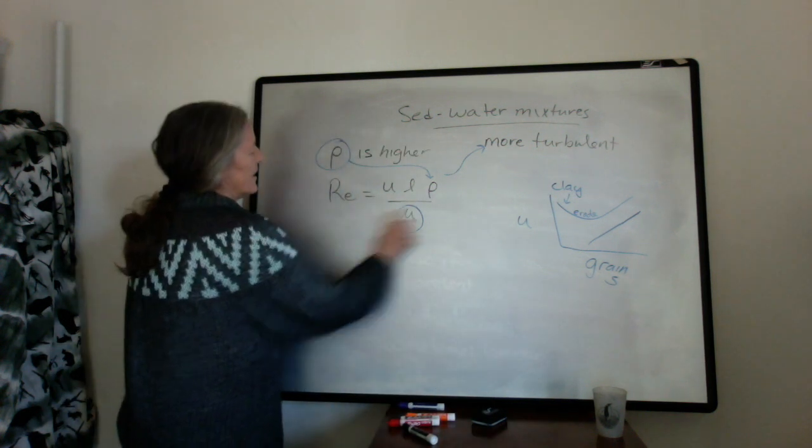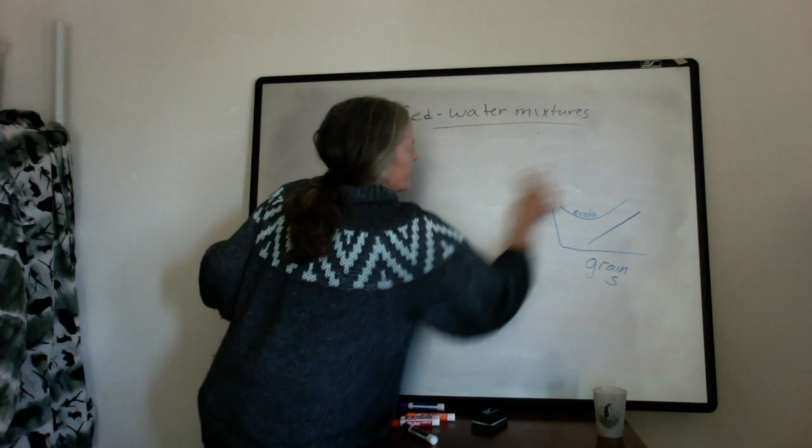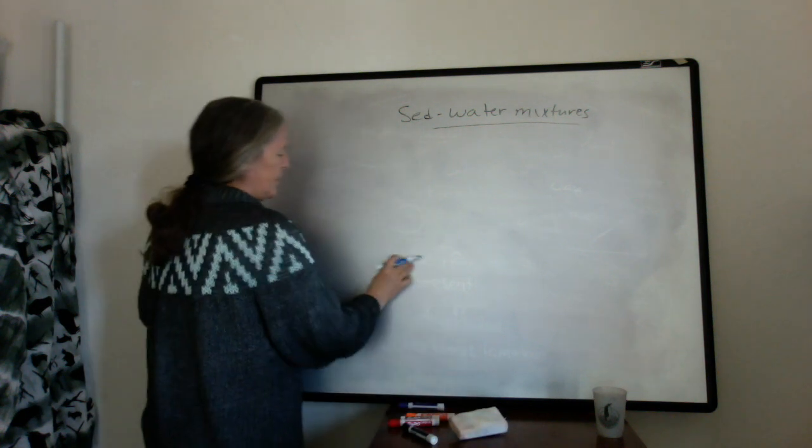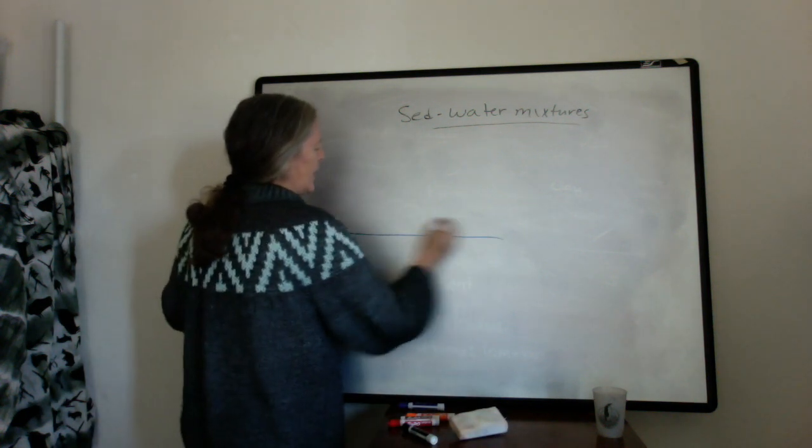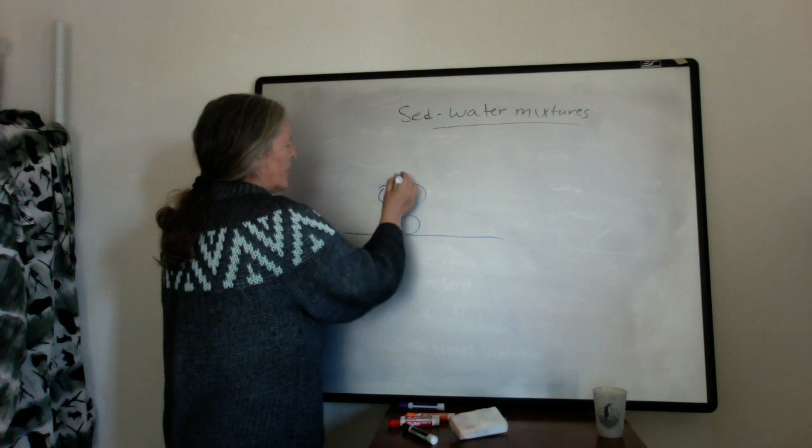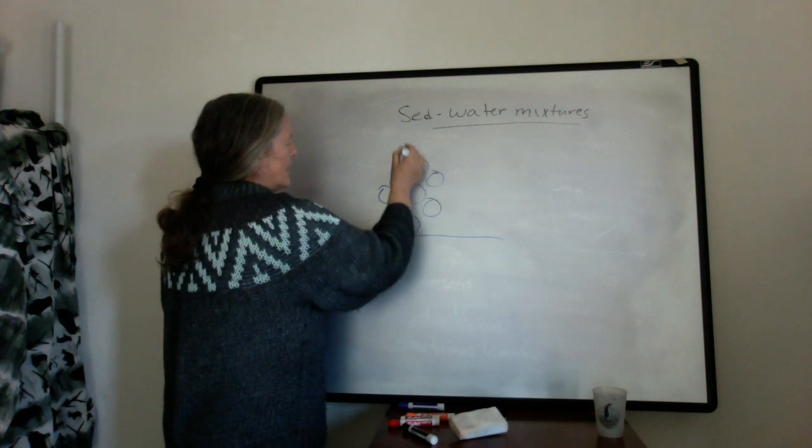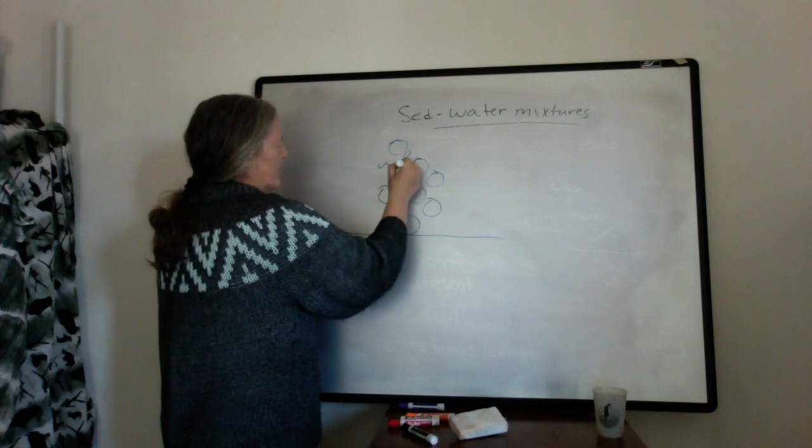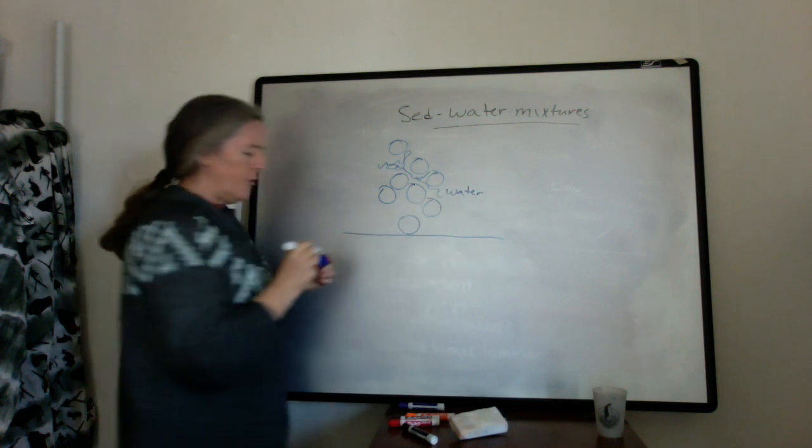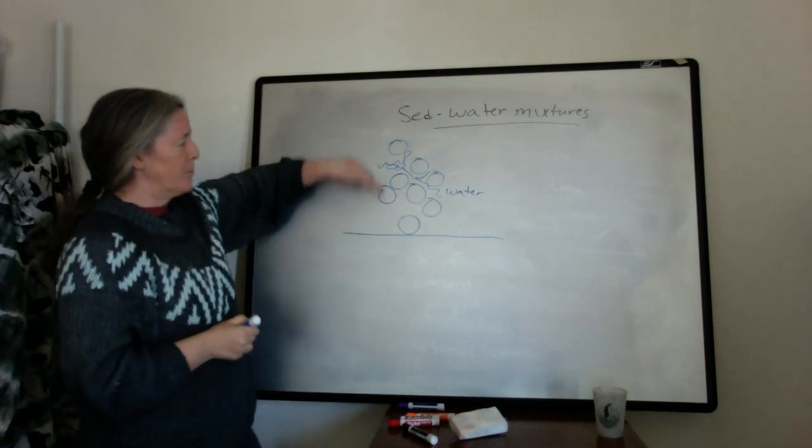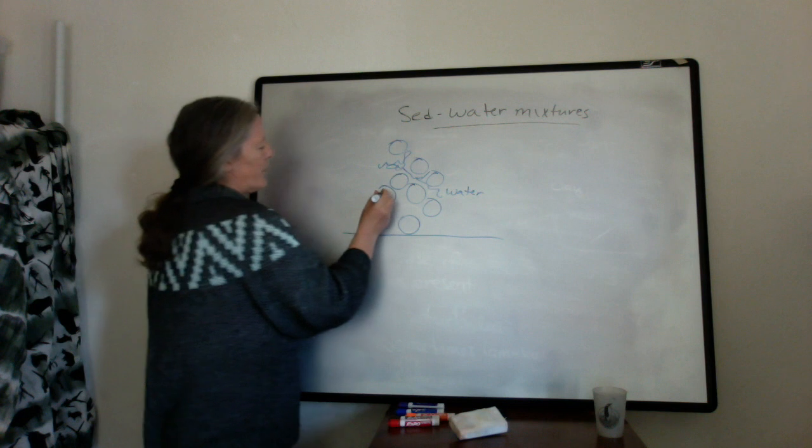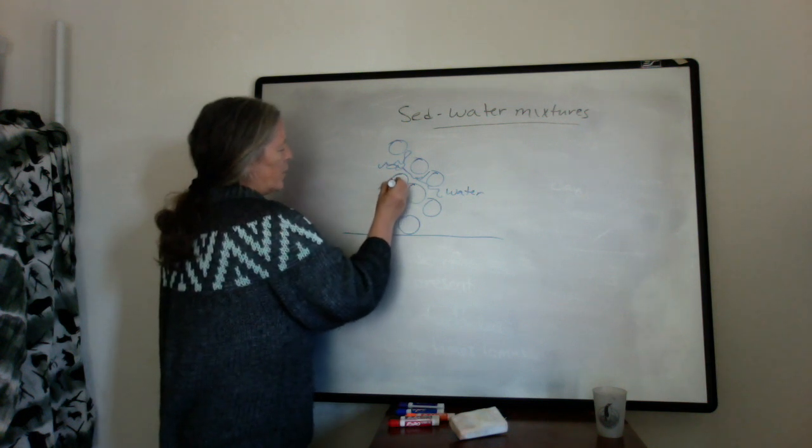And then there's a second thing that's really important for sediment water mixtures and that's that the grains, usually when we've been talking about grains, we've been talking about them in isolation. Say we have a grain on a bed. But in sediment water mixtures, the grains are really densely packed. So you have water between them here. And usually when we've been talking about sediment transport, we've talked about say the Bernoulli effect picking up the grain. But one of the things that happens in these really dense flows is that the grains will collide with each other.